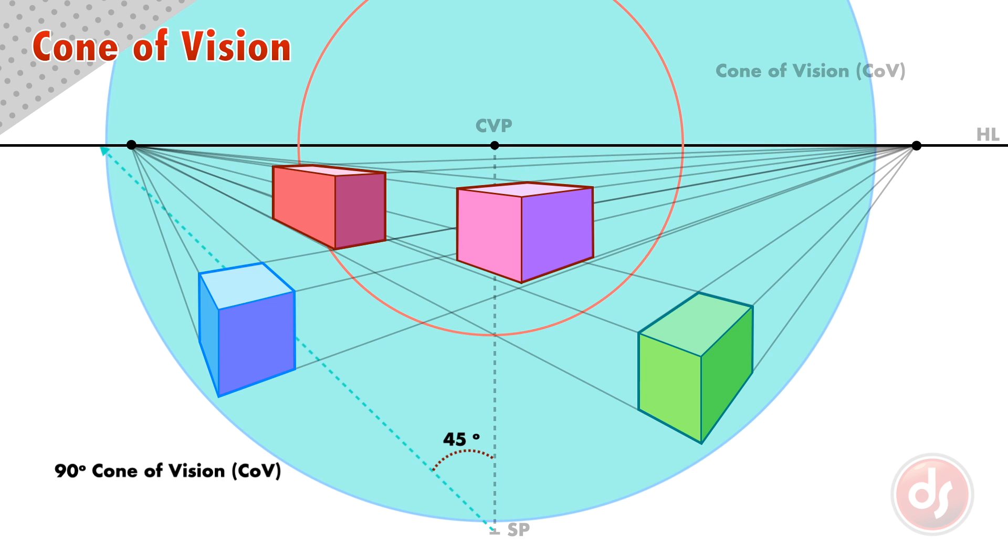Notice all of these boxes still fall inside a 90 degree cone of vision. They are all correct by the rules of perspective, but if you want your scene to feel more normal to human vision, stay inside that 60 degree cone of vision.